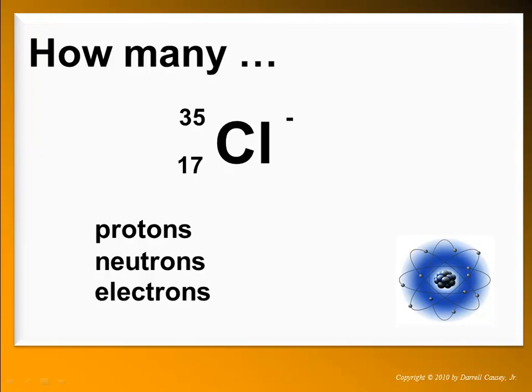Here's the chlorine ion. It's an anion because it gained an electron. 17 protons, 18 neutrons, and 18 electrons. It gained one electron.